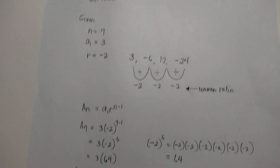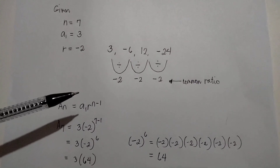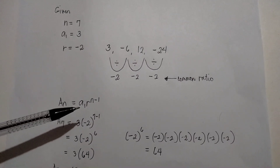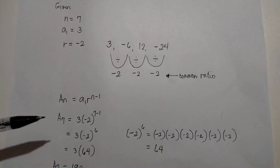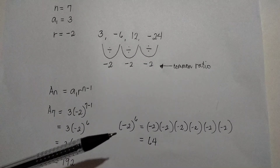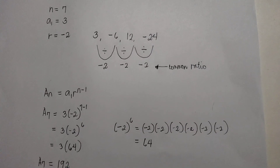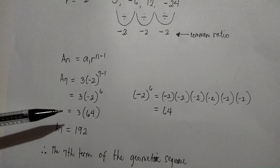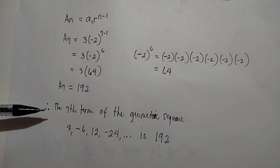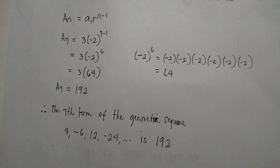Now, we are going to substitute the given into the formula: a sub n equals a sub 1 times r raised to n minus 1. That becomes a sub 7 equals 3 times the quantity negative 2 raised to n minus 1, which is raised to 6, since seven minus 1 is 6. The quantity negative 2 raised to 6 means negative 2 times itself six times, which equals 64. So a sub 7 equals 3 times 64, which is 192. Therefore, the 7th term of the geometric sequence 3, negative 6, 12, negative 24, and so on is 192. Thank you.